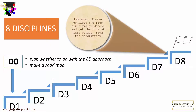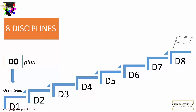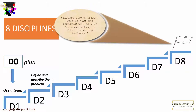In this chapter, I will give you a helicopter view of the 8D improvement process, and we will study it in much more detail in the coming lectures. First, we should plan whether to go with the 8D approach and, if so, make a road map for how to proceed. In D1, we select a team with the required knowledge and interest. In D2, we define and describe the problem by specifying it in quantifiable terms — the who, what, where, when, and why.